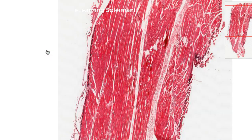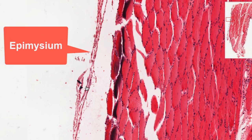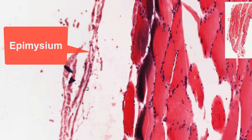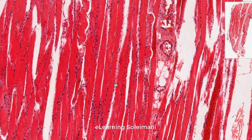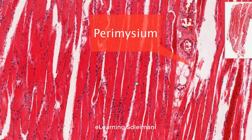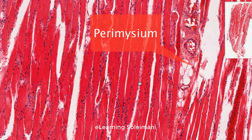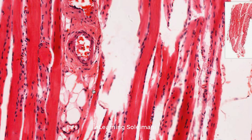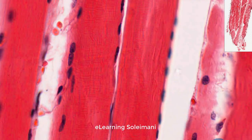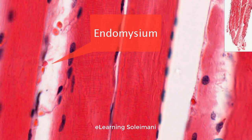There is a connective tissue layer surrounding the entire muscle called the epimysium. Between muscle bundles there is another connective tissue layer called the perimysium, and between individual muscle fibers there is the endomysium.